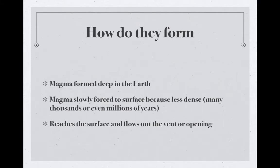So how do they form? Volcanoes form from the magma that's created deep within the earth. This magma is initially created by radioactive decay and gravity, which causes heat. That heat, when formed, can then slowly be forced to the surface because it's less dense than the rocks around it. When it gets to the surface through an opening or vent, it starts to come out and build up these volcanoes.